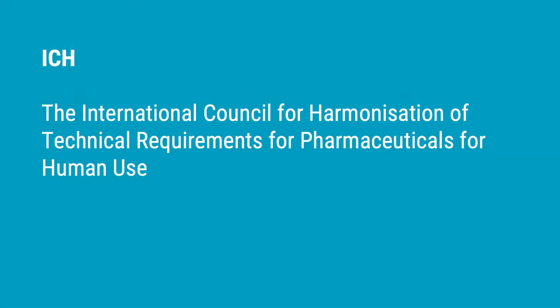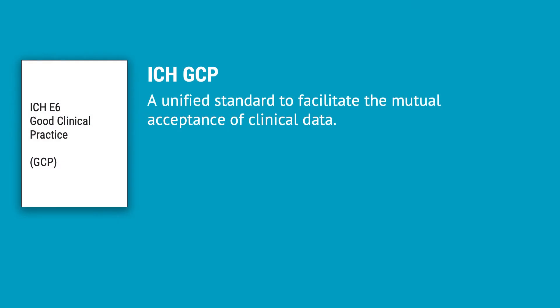The ICH stands for the International Council for Harmonization of Technical Requirements for Pharmaceuticals for Human Use. The mission of ICH is to promote public health by achieving greater harmonization of global drug development, by developing technical guidelines and requirements that can be used by regulatory authorities and the pharmaceutical industry. Harmonization leads to more rational use of humans, animals, and other resources, and it aims to eliminate unnecessary delays in the development of new therapies. The GCP follows ICH and enforces tight guidelines on the ethical aspects of clinical research.